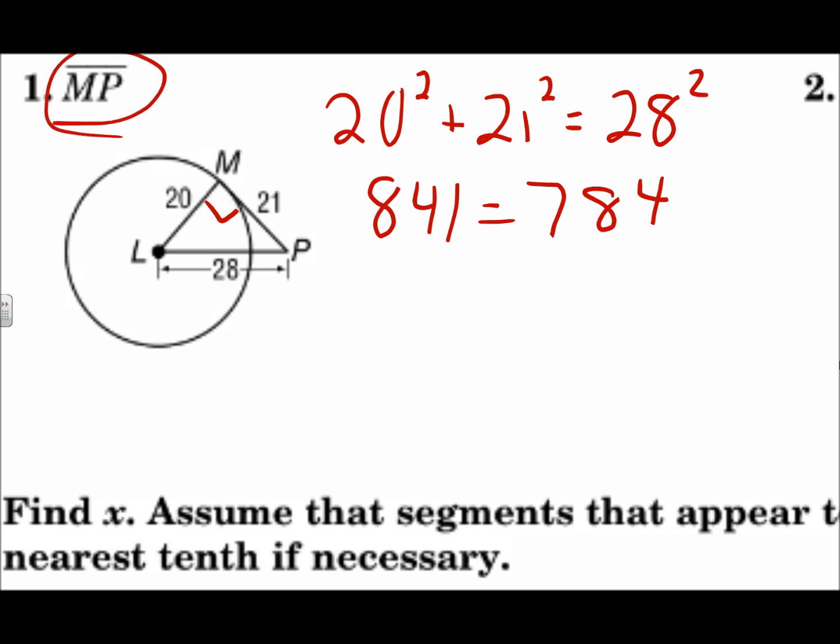then segment MP can't be a tangent because that is not a right triangle. So segment MP is not tangent to the circle. The Pythagorean theorem has to work in order to get a right triangle. If it's not a right triangle, we don't have a right angle, and therefore we don't have a tangent.